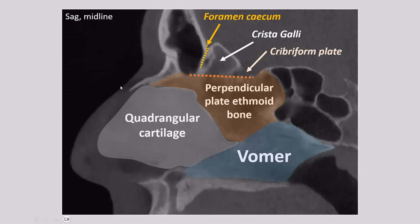Let's move on to the ethmoid bulla. The ethmoid bulla drains the anterior ethmoid cells, and it is the most anterior ethmoid air cell located posteriorly of the frontal recess. This is a pretty large ethmoid bulla; it can also be septated, consisting of a group of smaller air cells. The ethmoid bulla also drains in the middle meatus. Here we have the frontal recess. To be sure what the ethmoid bulla is, you best correlate with the sagittal image: it is located posteriorly of the frontal recess, and the cell anteriorly of the frontal recess is the agger nasi cell. Anterior ethmoid cells drain into the ethmoid bulla, and the ethmoid bulla drains into the middle meatus.